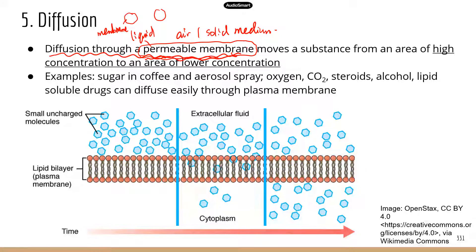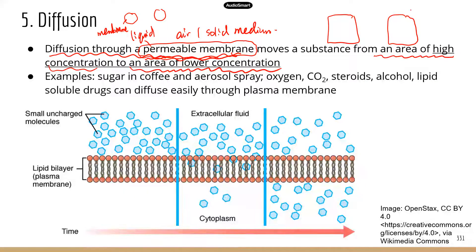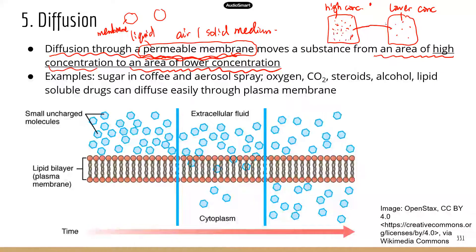Molecules tend to move from an area of high concentration to an area of lower concentration. You can think of concentration as similar to density — a high concentration area means that in the same volume of liquid you have a lot more of that molecule. When you have two areas of different concentrations, the molecules tend to move from the higher concentration area to the lower concentration area. This phenomenon is known as diffusion.